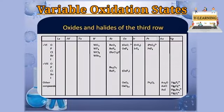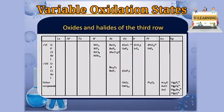Table से देख सकते हैं कि osmium की highest oxidation state +8 तक है। Osmium +7, +6, और +8 में भी compound बनाता है, इसलिए osmium maximum +8 तक oxidation states show करता है। I hope आपको इन compounds को देख कर clear हो गया होगा कि कौन सा compound higher oxidation states show करता है और कौन सा limited oxidation states।